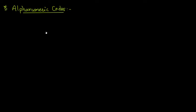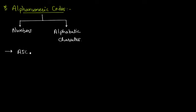Alphanumeric codes consist of both numbers and alphabetic characters. The most commonly used alphanumeric code is known as ASCII code.